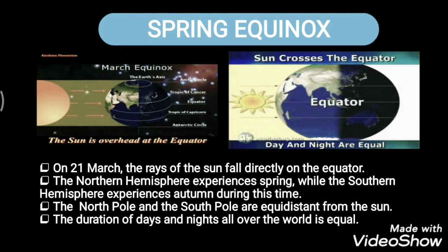During this time, the North Pole and the South Pole are equidistant from the Sun. Because of this, the duration of days and nights all over the world is equal on that particular day. The date is approximately 21st of March, though it can sometimes vary slightly.